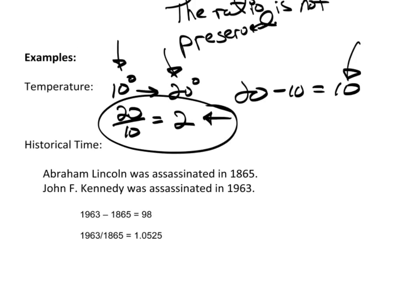Historical time is another example. Abraham Lincoln, as an example, was assassinated in 1865. That's the year he was assassinated. John F. Kennedy was assassinated in 1963. Well, 1963 minus 1865 is 98. That has meaning. 98 years transpired from the year that Abraham Lincoln was assassinated to the year that John F. Kennedy was assassinated. But if I take 1963 and I divide it by 1865, I get 1.0525.